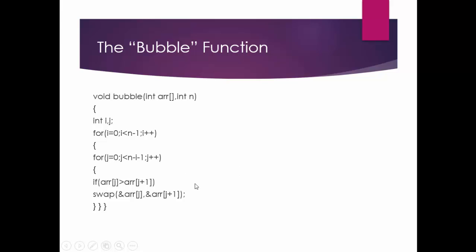If arr[j] is greater than arr[j+1] — meaning the left element is greater than its immediate right element — then we call swap. We use ampersand because we are swapping using call by reference, so the swap happens at the memory location and not just within the scope of this function. Even if we check the array from main, the swap will be visible there.